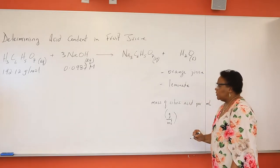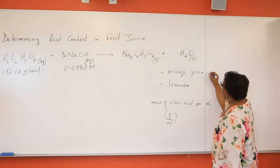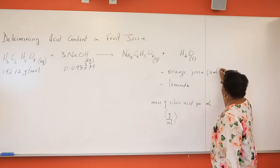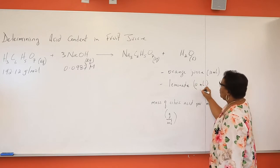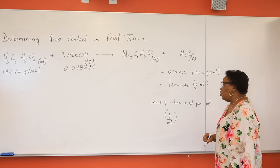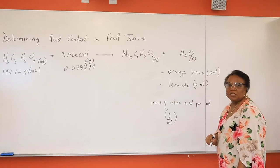In each experiment you are starting off with 10 ml of each of the fruit juices. We are going to dilute it with about 10 ml of water and then we are going to proceed with the titration.